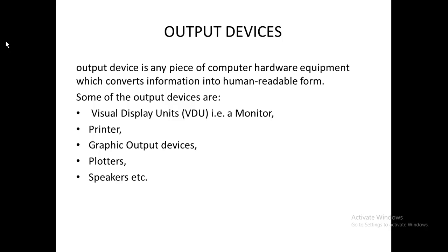The output devices are our next point of discussion. Output devices are hardware equipment which converts information into human-readable form. As we use the computer, we want it to transform the data which we input and process it into something else. When it does that, we produce what we call the output.